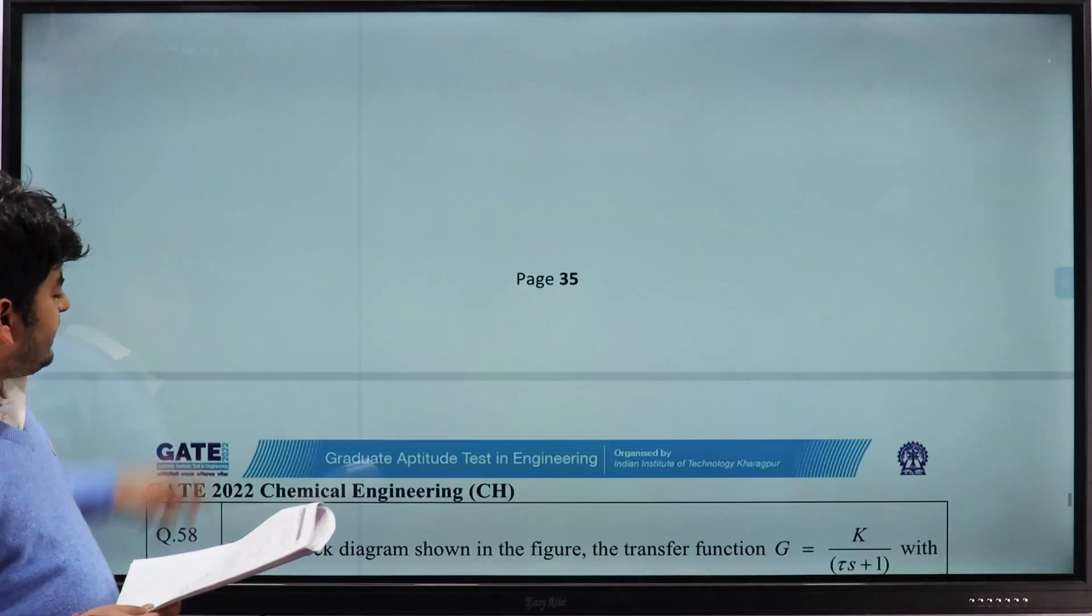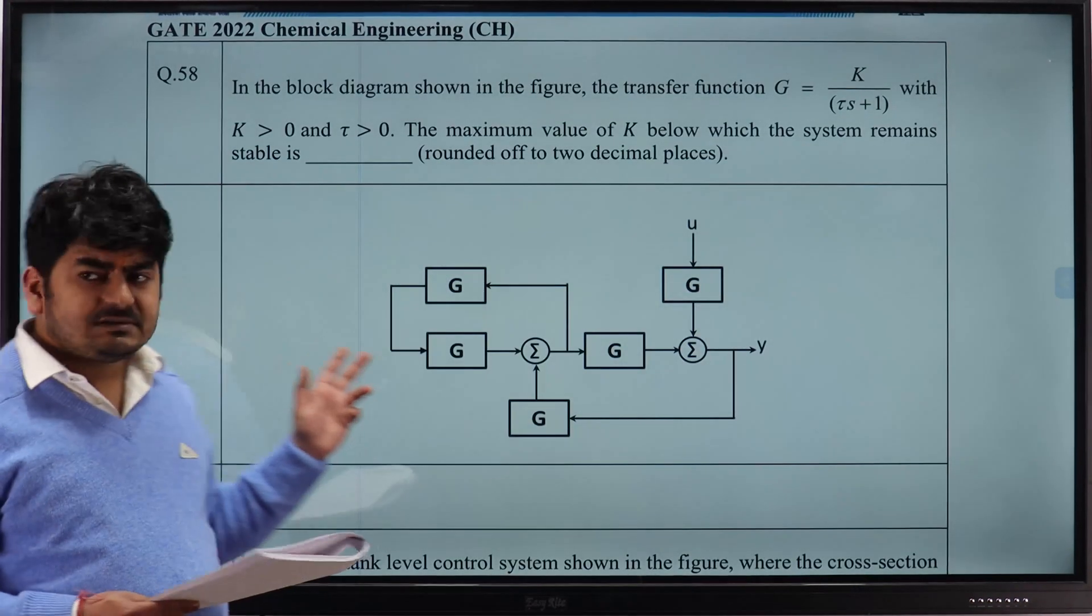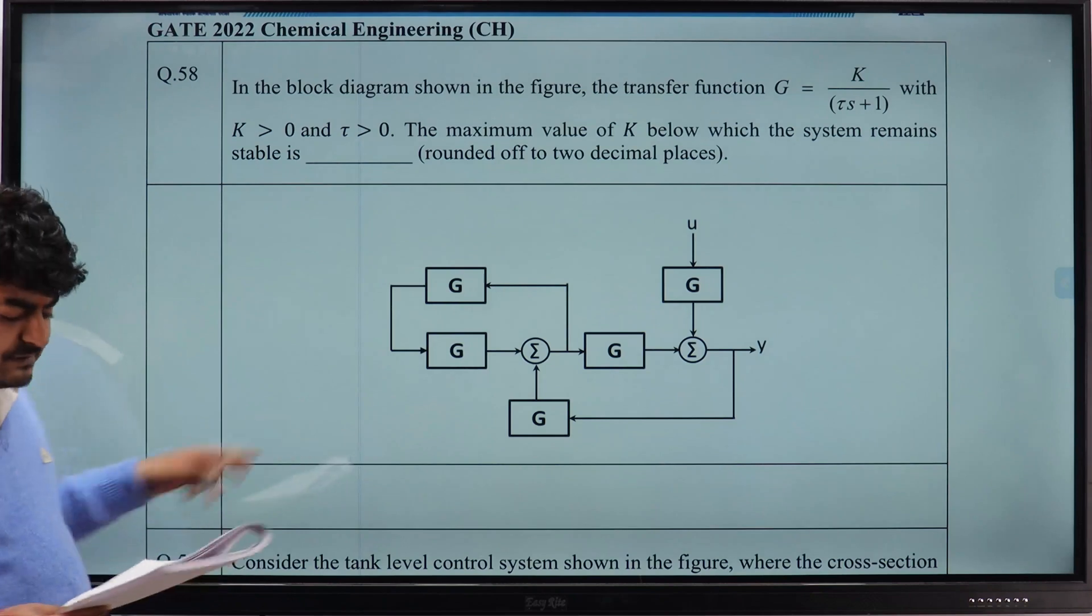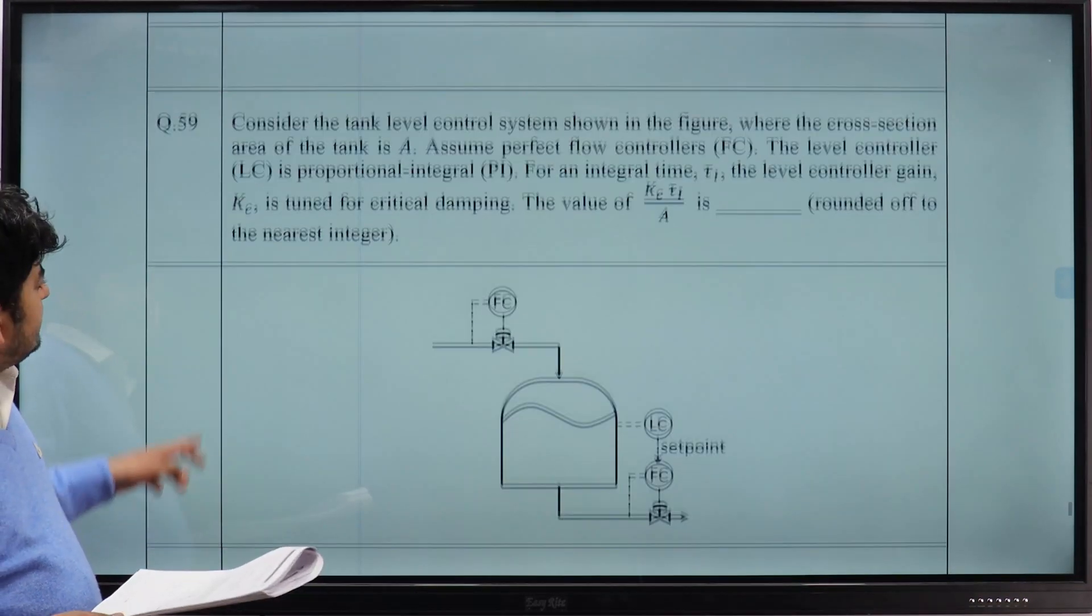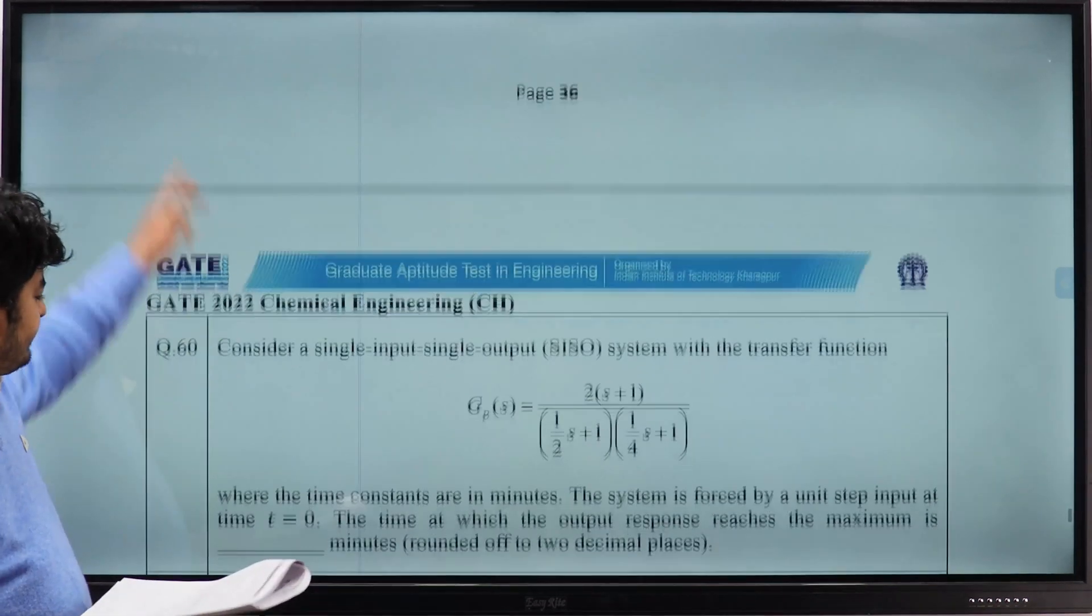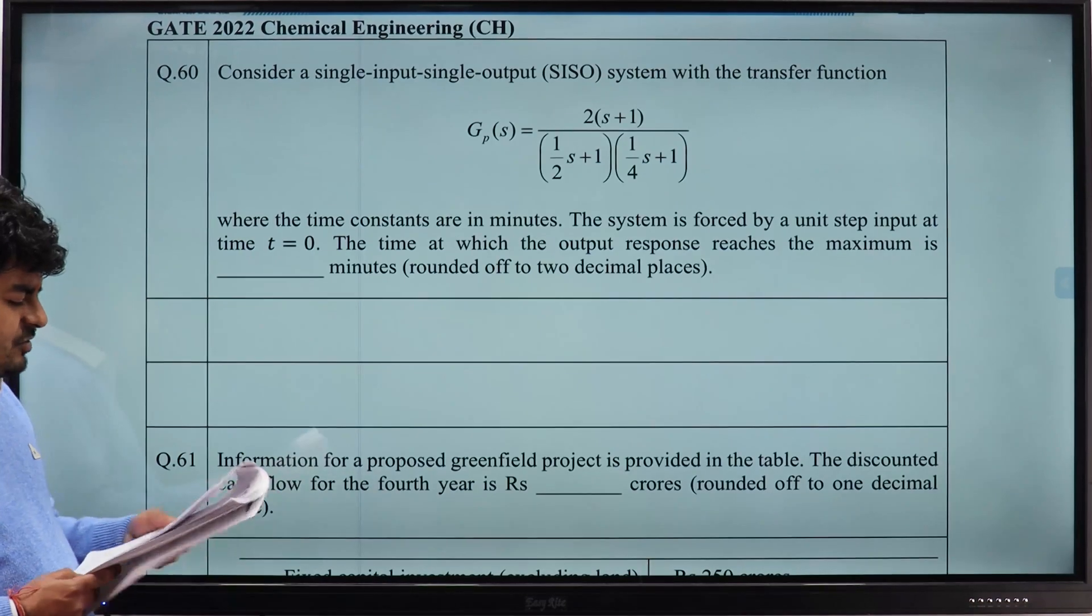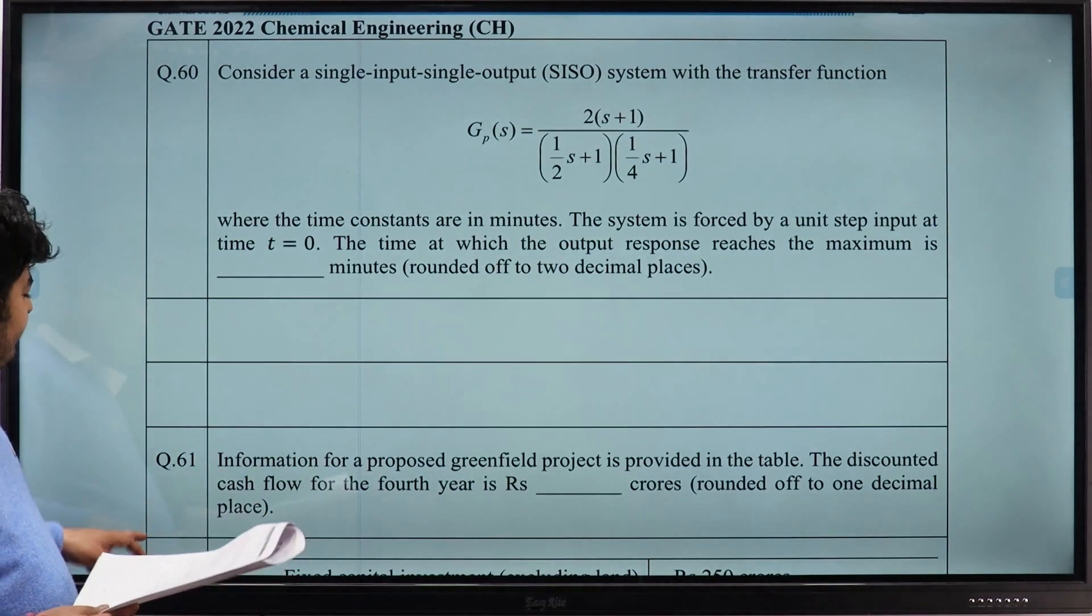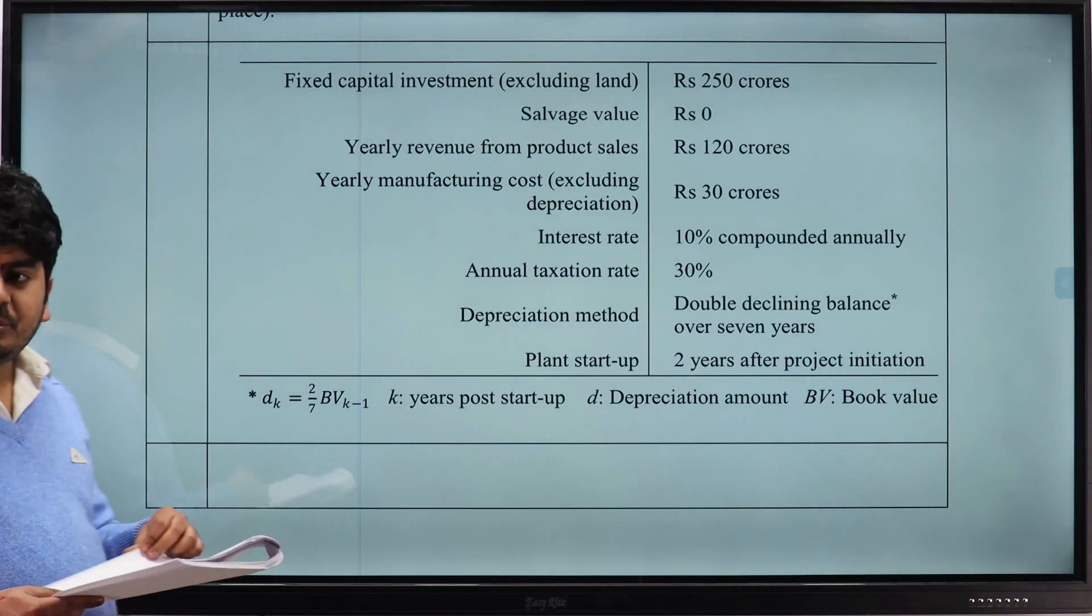Question number 58, the answer we are getting is 0.7. For 59, it is about 1. For question number 60 from process dynamics and control, 0.55.